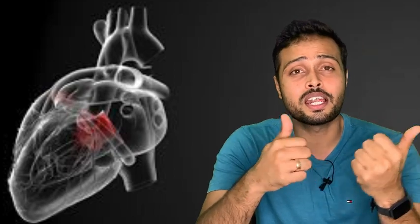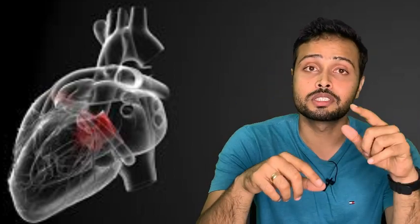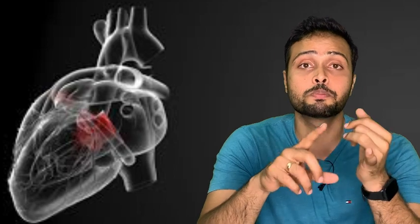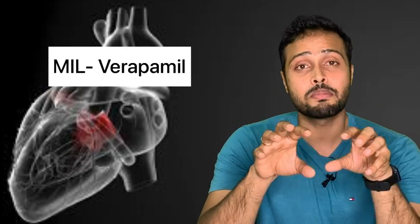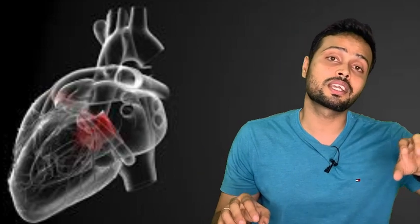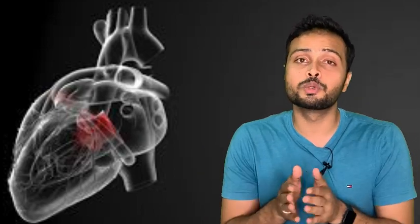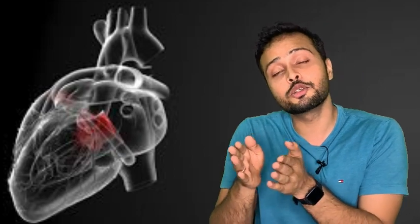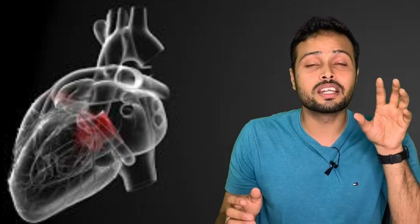How do you remember this drug? This drug is going to end with '-pamil' or '-pill'. The previous one, ACE inhibitors, ended with '-pril'; this one ends with '-pamil', so for example verapamil. Verapamil is a drug used as a calcium channel blocker, and its main work is to perform vasodilation, reduce heart rate, and reduce the strength of contractions.